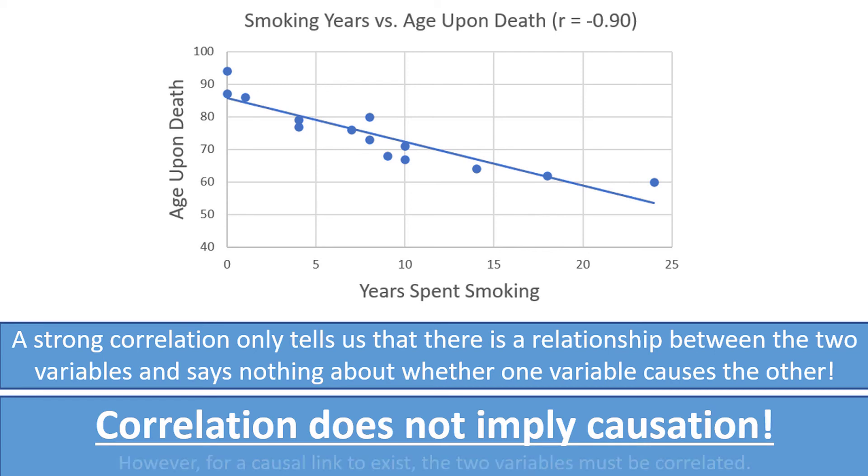Correlation between two variables does not imply causation. However, in order for a causal relationship between two variables to exist, they must be correlated. So finding a strong correlation through observational data like we have might be a good reason to pursue more rigorous experiments to determine if a causal relationship exists.